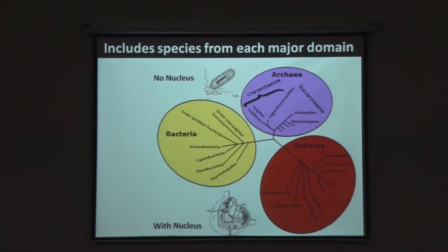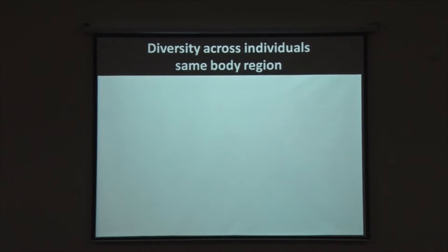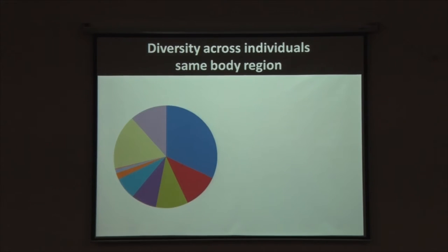Now technologies have become available so that even without culturing, we are able to figure out which species of bacteria or microorganisms thrive in a given body part. This is called next-generation DNA sequencing. Using DNA evidence, even though we cannot culture these bacteria in a petri dish, we can identify what kind of bacteria they are. We also recognize through these technology platforms that there is diversity not only within the same individual across different body parts, but also across individuals when focusing on a specific body part.